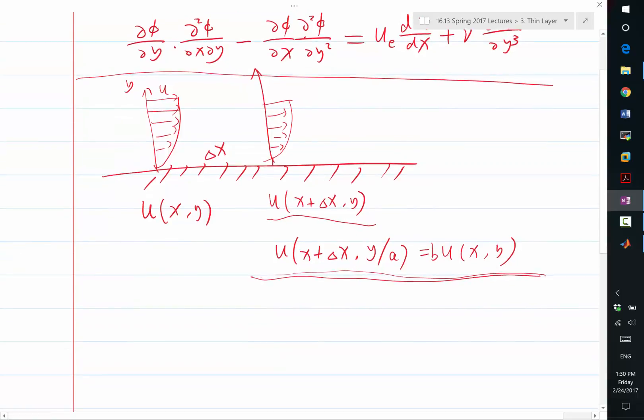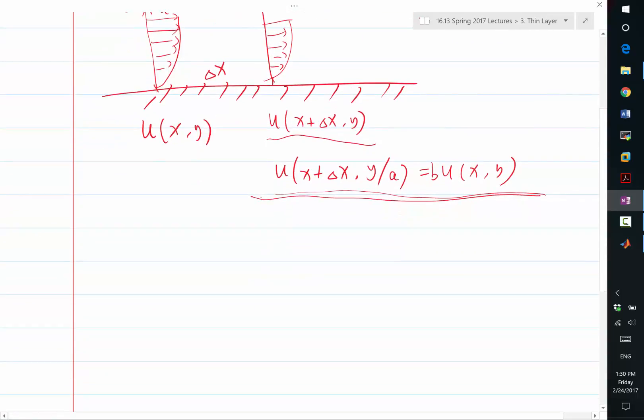Yes, we can. So we know that when delta x is very small, a and b are going to be very close to what? If we want the profile to be continuous at least.